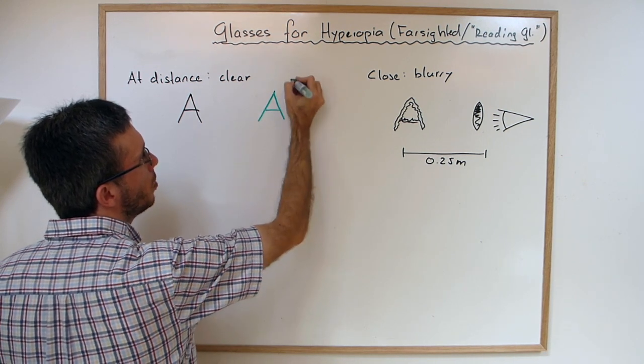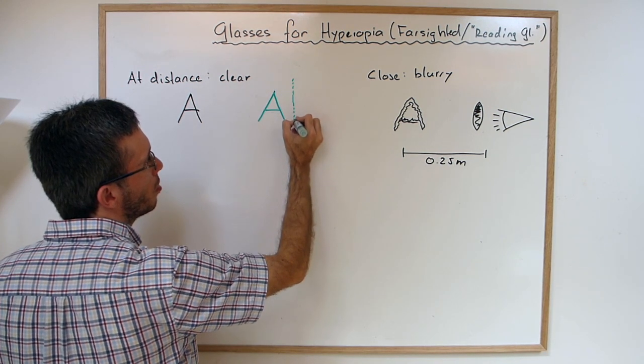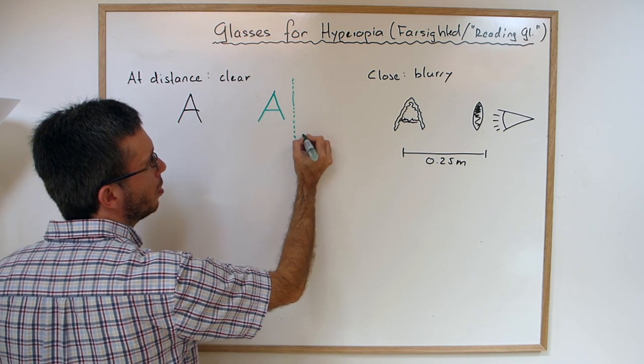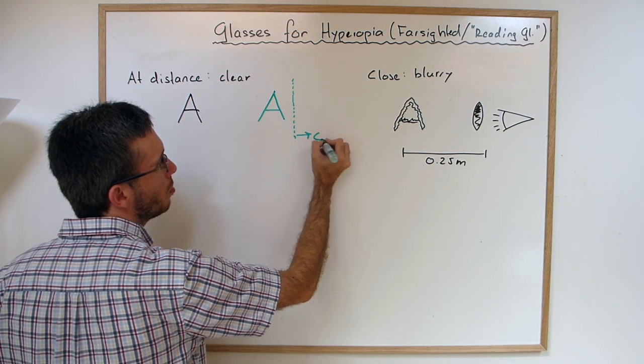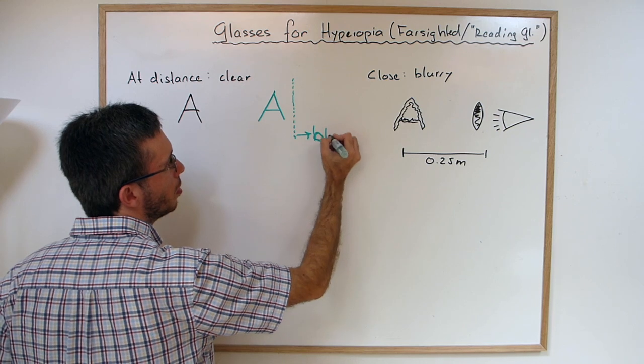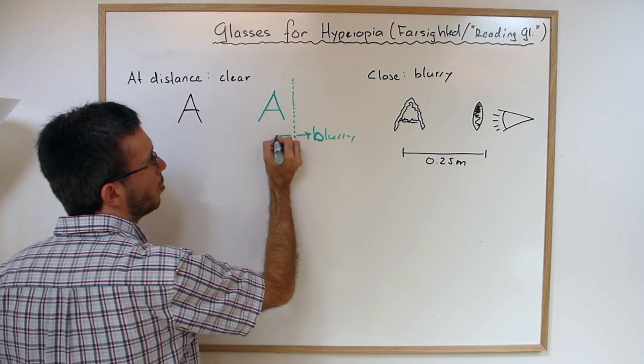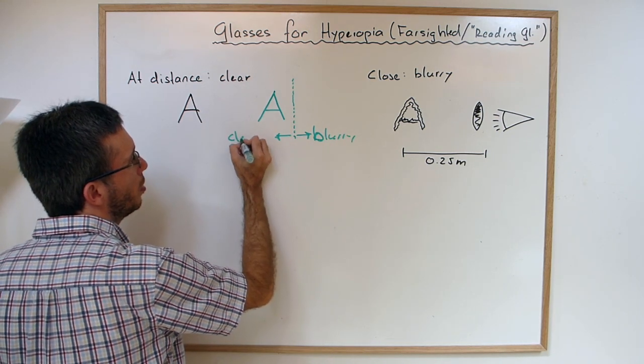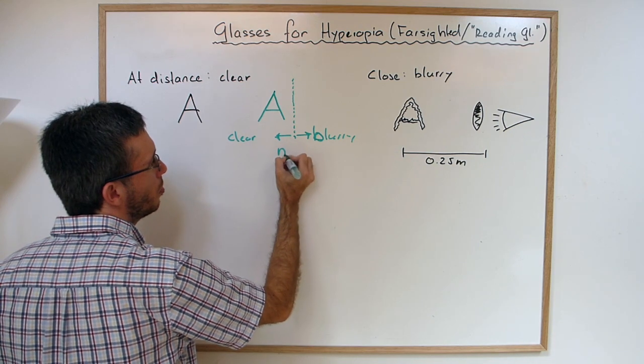And how far away needs to be just so far away that it starts getting sharp. So the point where if you're too close you're blurry, and if you're too far it's clear, it's called the near point.